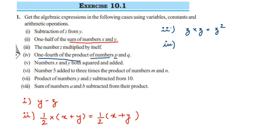The fourth question: one fourth of the product of numbers p and q. One fourth means 1 by 4. 'Of' means multiplication and 'product' also means multiplication. So we multiply p and q, giving pq. The answer is 1/4 into pq, written as (1/4)pq — no multiplication sign shown means multiplication.